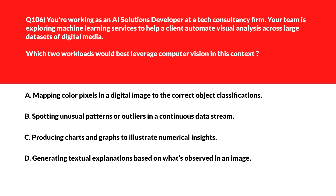This is a multiple choice question where we need to select two correct answers. Option A says mapping color pixels in a digital image to the correct object classification — Computer Vision helps map pixel-level data to object categories, enabling object recognition, so let's keep this. Option B says supporting unusual patterns or outliers in a continuous data stream — analyzing data streams for anomalies involves pattern recognition in time series data, which is best suited for data analytics or machine learning, not Computer Vision, so incorrect.